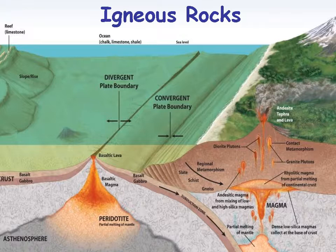On the right side of the picture, you see a partial melting of the mantle. You have dense, low silica magmas that collect at the base of the crust. As that melt continues with partial melting, you have rhyolitic magma and plutons that can be miles and miles in width. Plutons cool in place, and then if you have erosion, you can have that granite exposed on the surface.